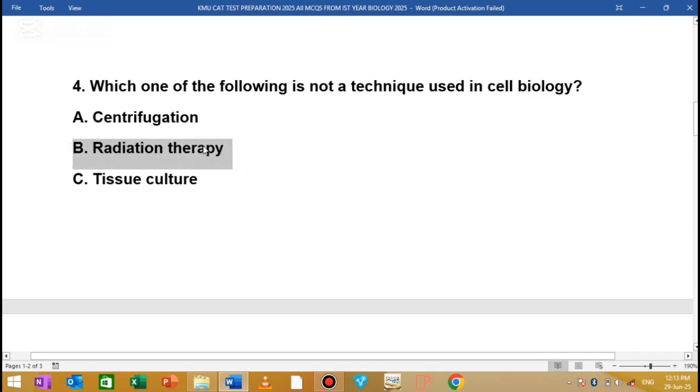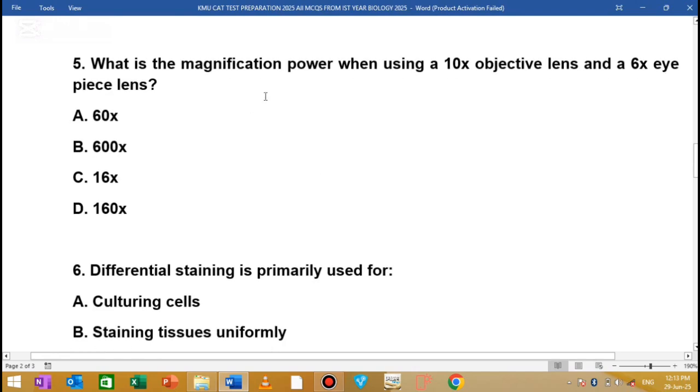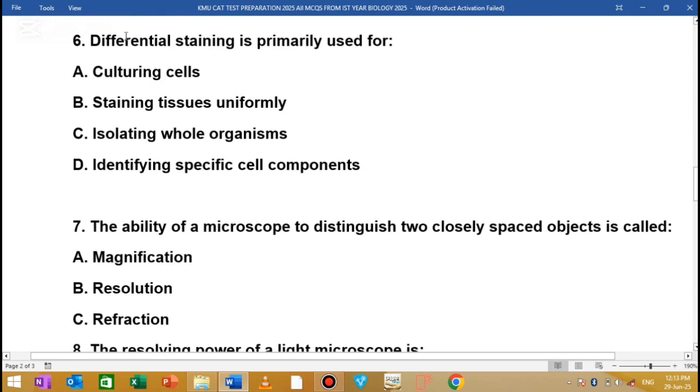Question 5: What is the magnification power when using a 10x objective lens and 6x eyepiece lens? You multiply the objective lens by the eyepiece lens - 10x times 6x.